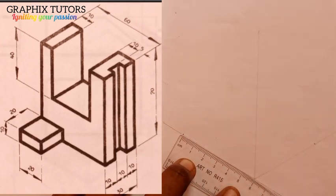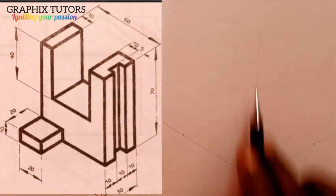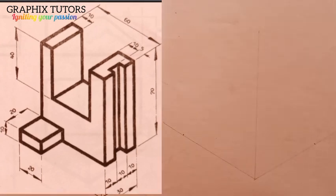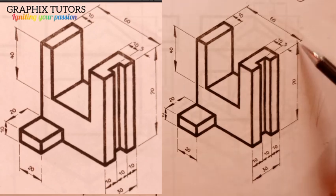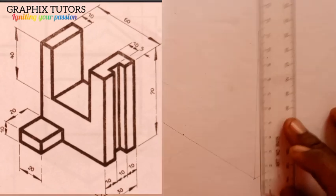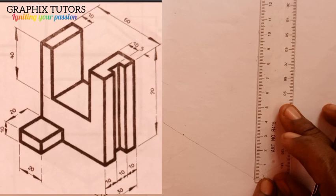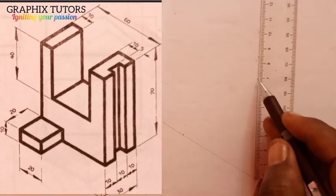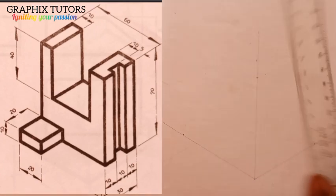That gives us 60. Now the height — the Y axis — the height will be 70. So measure 70. We'll have 70 here, from 0 to 7 is 70.